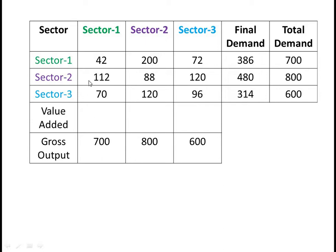Similarly, the second row states the output of sector 2 demanded by various sectors for intermediate use and for final demand. And the third row states the amount of output of sector 3 demanded by various sectors for intermediate use and for final consumption. The gross output of sector 1 is 700, gross output of sector 2 is 800, and gross output of sector 3 is 600.